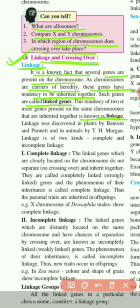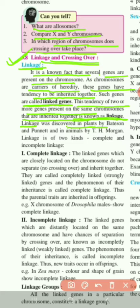The tendency of two or more genes present on the same chromosome to be inherited together is known as linkage. Their inheritance is known as linkage. Linkage was first discovered in plants by Bateson and Punnett, and in animals by T.H. Morgan. Linkage is of two kinds: complete and incomplete linkage.